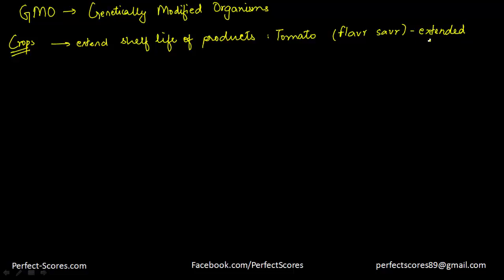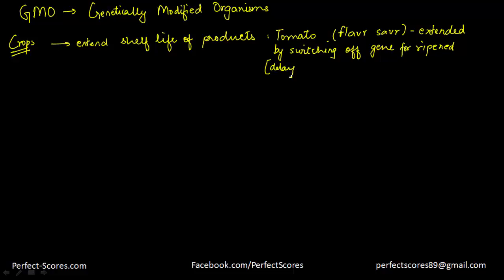Extended quality is achieved by switching off the gene that allows the tomato to go bad, or switching off the gene for ripening. So the tomatoes do not get ripened easily — they need more time to ripen. This delays the natural process of softening of the fruit, extending the shelf life of the product.